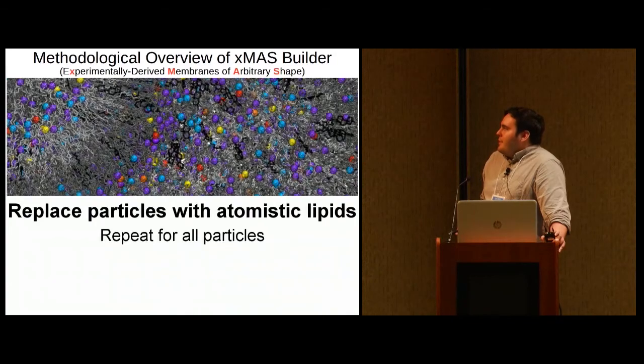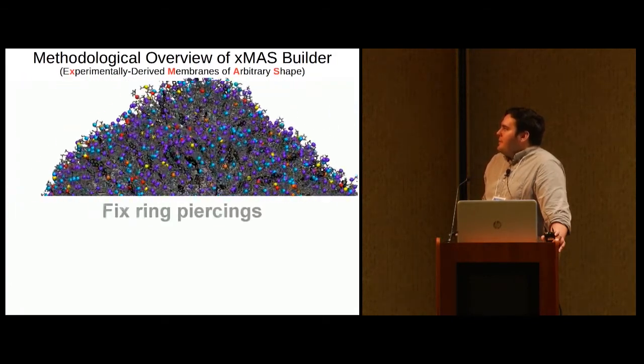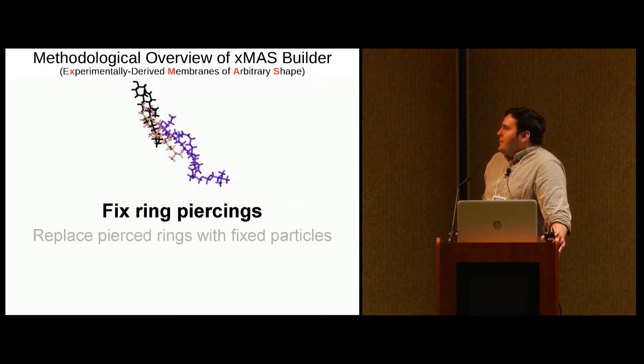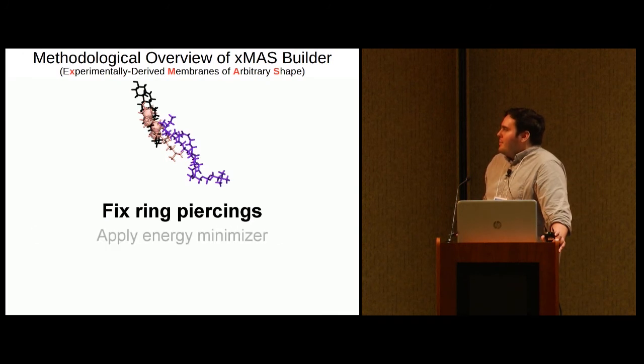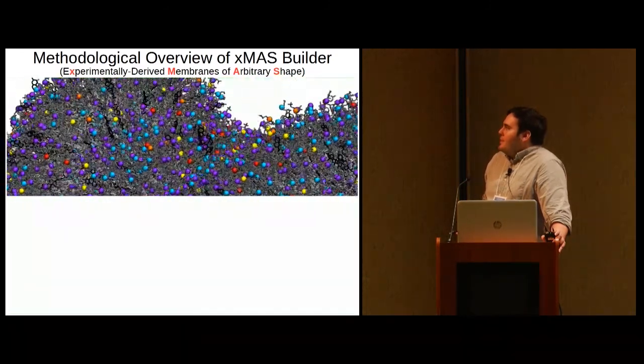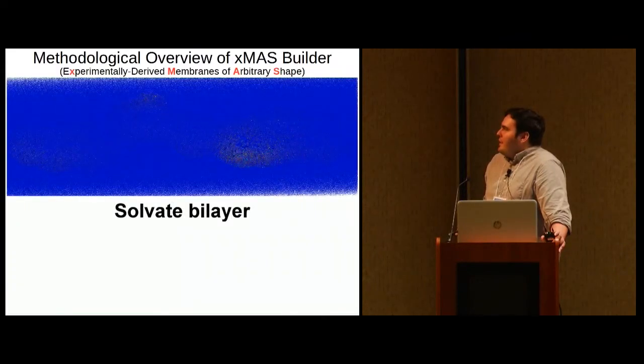At this point, you have a fully atomistic membrane model, but it's not yet ready for simulation. You first need to fix ring piercings and other complex lipid clashes. XMIS Builder has an automated way of detecting and fixing these types of complex lipid clashes, which I'll be talking about a little bit more later on. After this, you can solvate the system and fix the problems associated with solvation, and then finally you're ready to run your simulation.